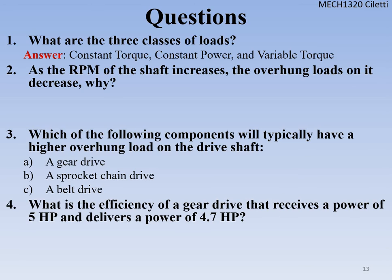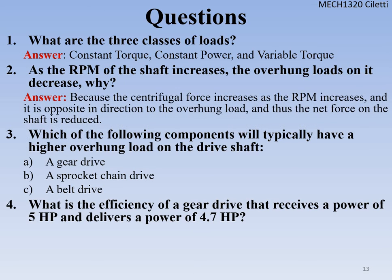As RPM of a shaft increases, overhung loads decrease — due to centrifugal force. The faster we spin, the greater the centrifugal force, similar to an ice skater pulling their arms in and spinning faster.